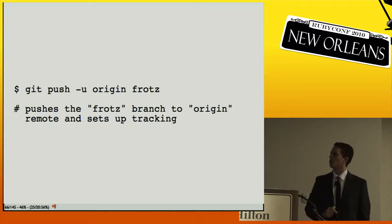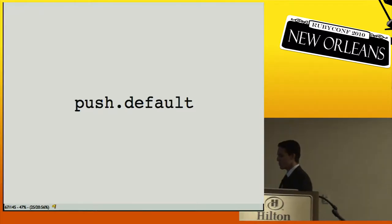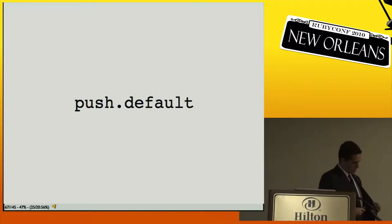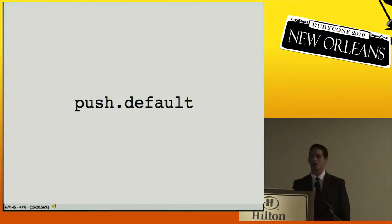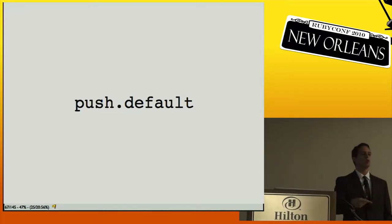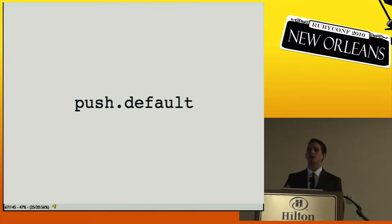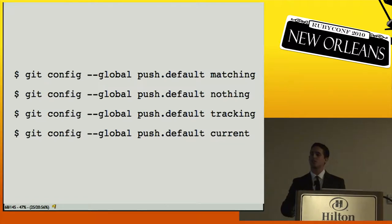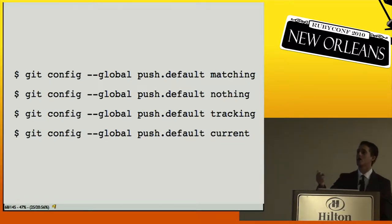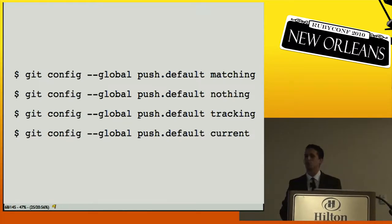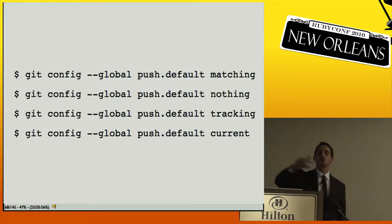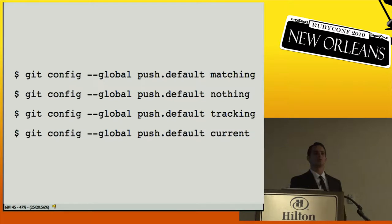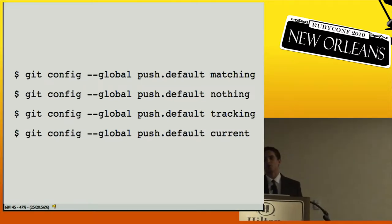If you do have tracking branches, they're useful for `git pull` — it will fetch and then automatically try to merge the tracking branch in. For `git push origin`, by default Git uses 'matching' mode: it will try to push every branch you have locally to match branches of the same name on the remote. That's what `git push origin` does by default.